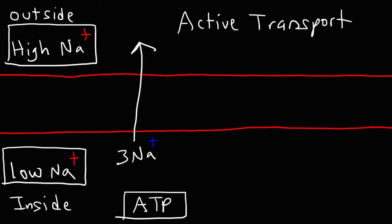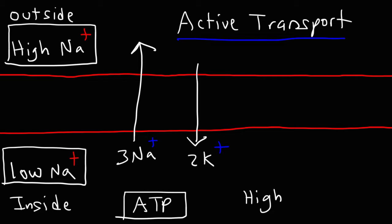As the three sodium ions move up the concentration gradient, two potassium ions are going to move in the opposite direction — so it's a 3 to 2 ratio. The concentration of potassium ions inside the cell is high, and the concentration of potassium ions outside of the cell is low. So the potassium ions are also moving up against their concentration gradient — using energy to go against the concentration gradient, moving from a region of low concentration to a region of high concentration. That's a basic review of how the sodium-potassium pump works.